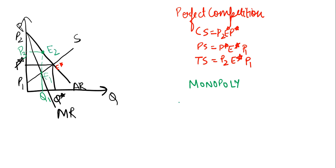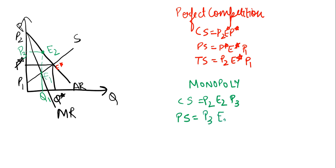Now, our consumer surplus is equal to the area above the price line P3 and below our demand line — the triangle P2, V, E2. Our producer surplus is equal to the area below our price line P3 E2 and above our supply curve — that is this trapezium area, which equals P3 E2 E1 P1.